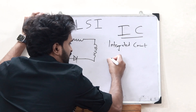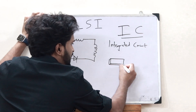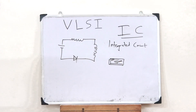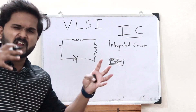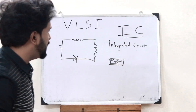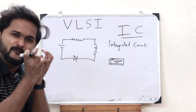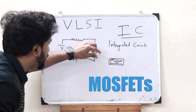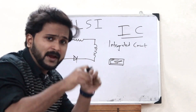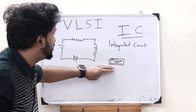An integrated circuit is basically a flat piece of a semiconductor material, usually silicon. On this particular semiconductor material, it contains thousands of electronic circuits. This is done by integrating a large number of very tiny MOSFETs onto this particular semiconductor material, giving us what we refer to as an integrated chip.